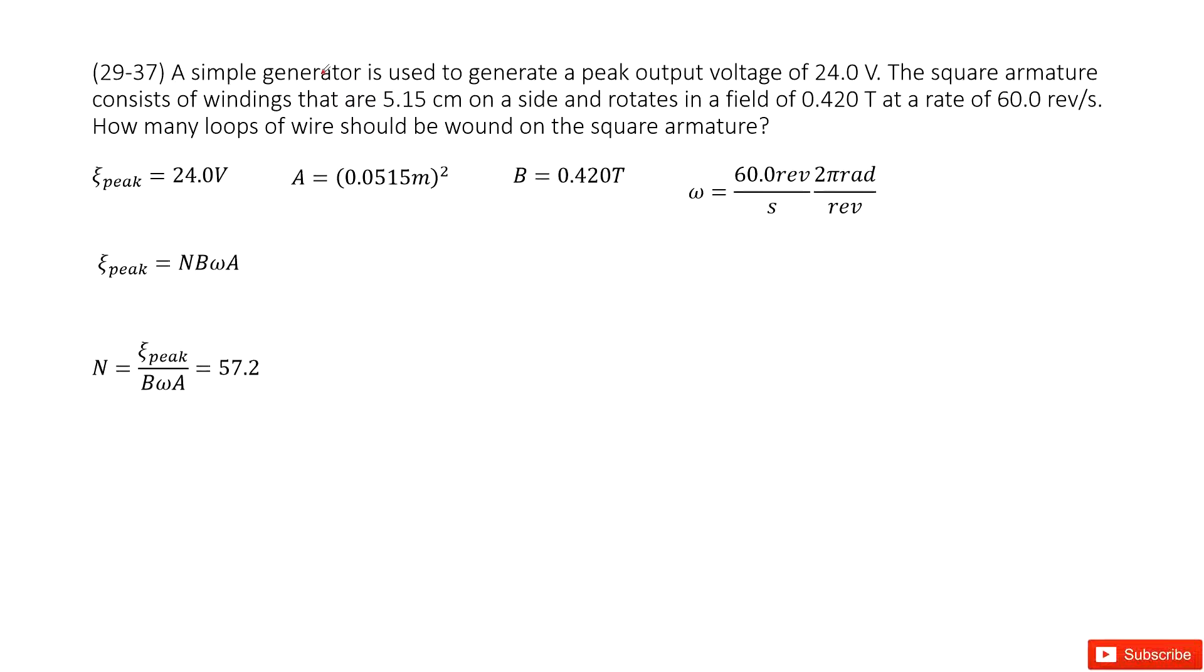So we have a generator, and we know its peak output voltage. We can write it as epsilon peak, and it's given there.